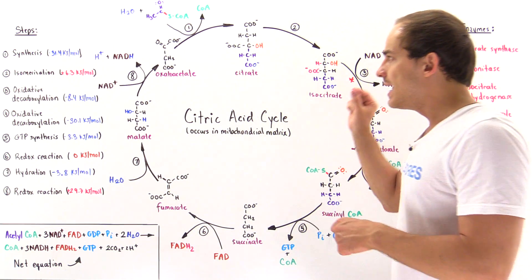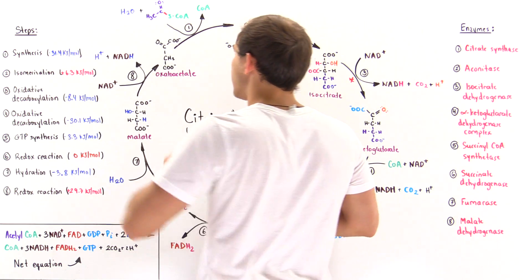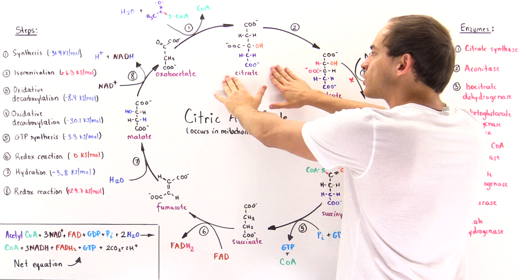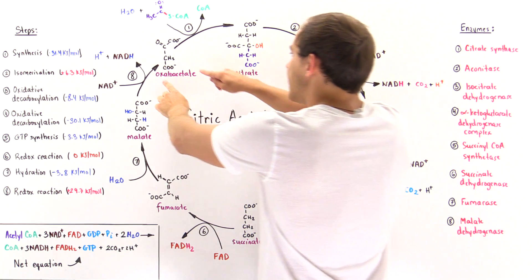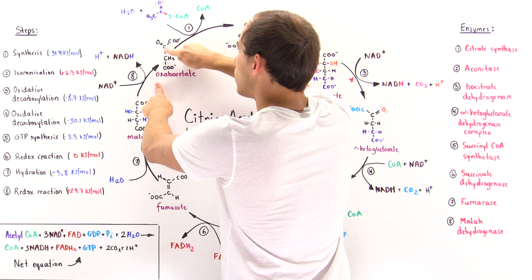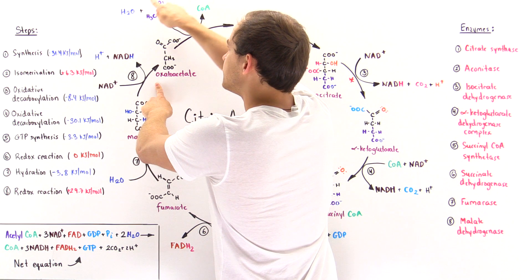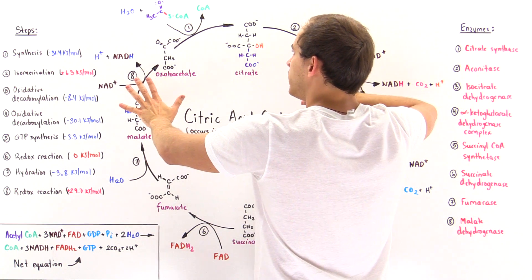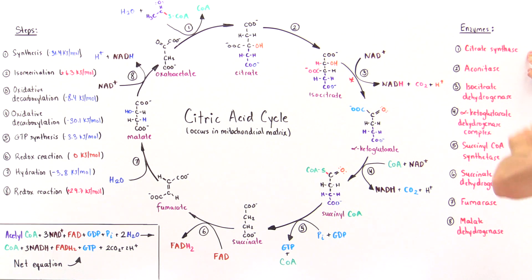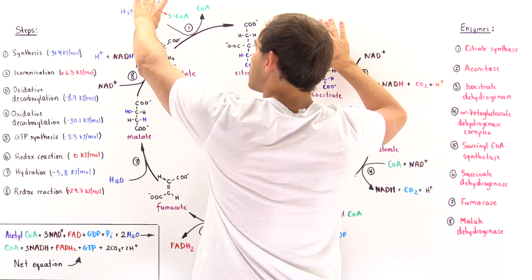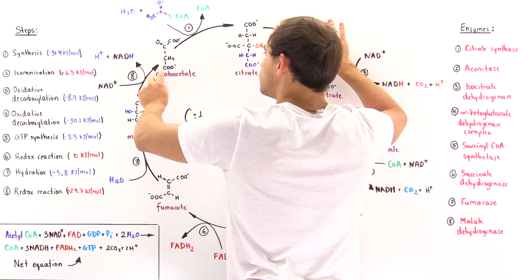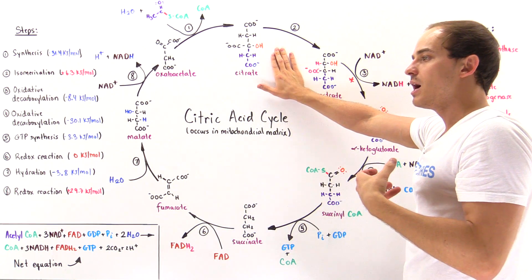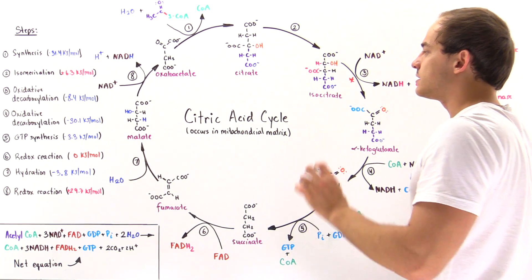In step one, we have a water molecule, this acetyl-coenzyme A, as well as an oxaloacetate react to ultimately produce a six-carbon molecule known as citrate. We begin with the oxaloacetate of four carbon molecules, and we begin with this acetyl-coenzyme A that contains a two-carbon component. The enzyme known as citrate synthase catalyzes the transfer of this acetyl group from the acetyl-coenzyme A onto the oxaloacetate, and that forms the citrate molecule. Citrate is actually a conjugate base of citric acid, and that's why we call this the citric acid cycle.